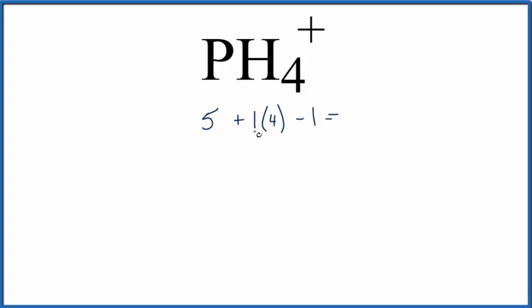So 5 plus 4 is 9 minus 1. We have 8 total valence electrons for the PH4 plus Lewis structure.